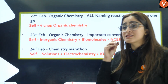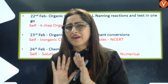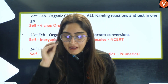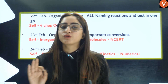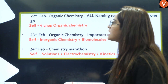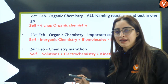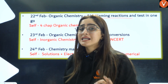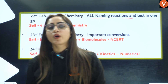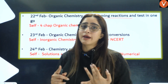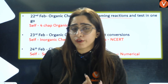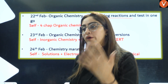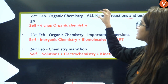Starting with the 22nd of February — today you can relax and make a plan. Write it down somewhere and make sure to complete those targets on time. On 22nd of February, we will start with Organic Chemistry — all naming reactions and tests in one go. The 4 chapters of Organic Chemistry are: Haloalkanes and Haloarenes, Alcohols, Phenols and Ethers, Aldehydes, Ketones and Carboxylic Acids, and Amines. The important part I will already teach you in this particular lecture.